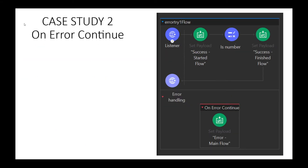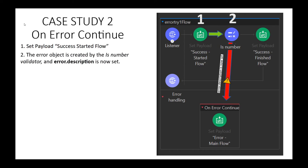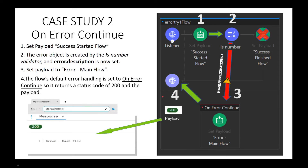Case Study 2: OnErrorContinue. Study the following diagram — what output will the client receive? Step 1, we begin at the SetPayload transformer, setting a string equal to SUCCESS STARTEDFLOW. Step 2, we move to the ISNumberValidator, which checks to see if the payload is an integer. Step 3, it's not, so we have an error condition, an error description, and we move to the flow's error handling routine, which is defined by a single OnErrorContinue handling component. Step 4, further processing of the flow will not continue, and a status code of 200, along with the payload set in the error handling routine — in this case, ERROR MAINFLOW — will be sent to the client.